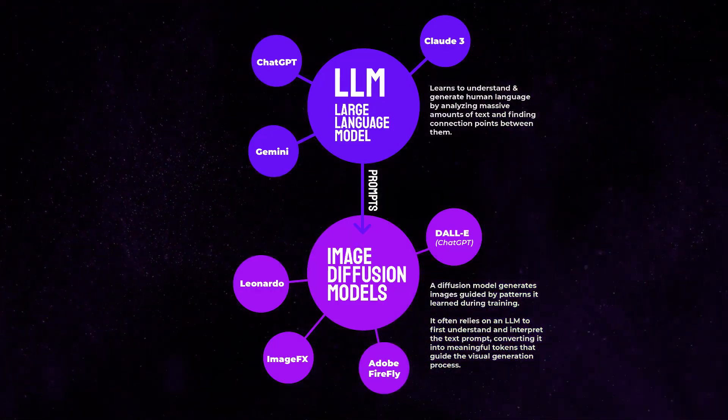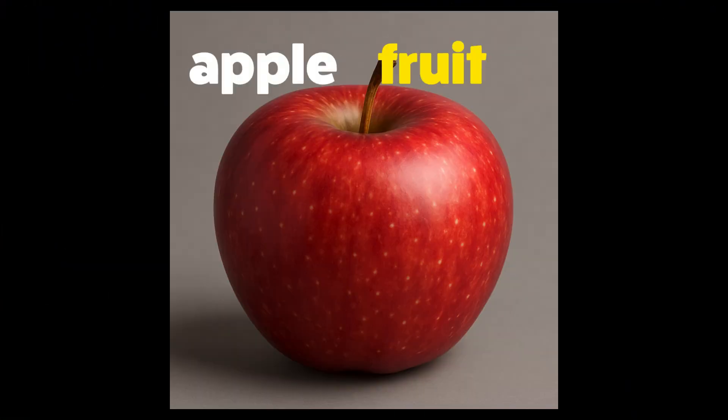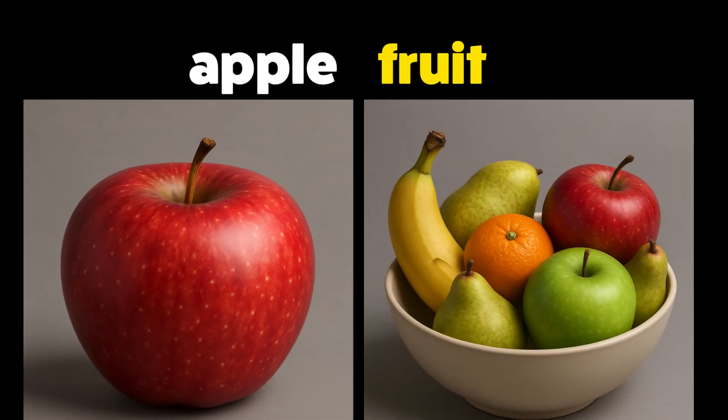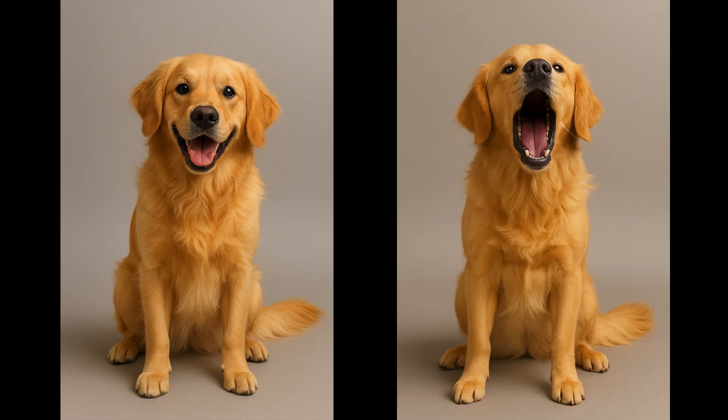For example, the model can recognize that 'apple' relates to fruit without being explicitly taught that connection. This ability to interpret language is essential for image generation tools. Before an AI can create a visual of a dog barking, it must first understand what a dog is and what it means to bark.